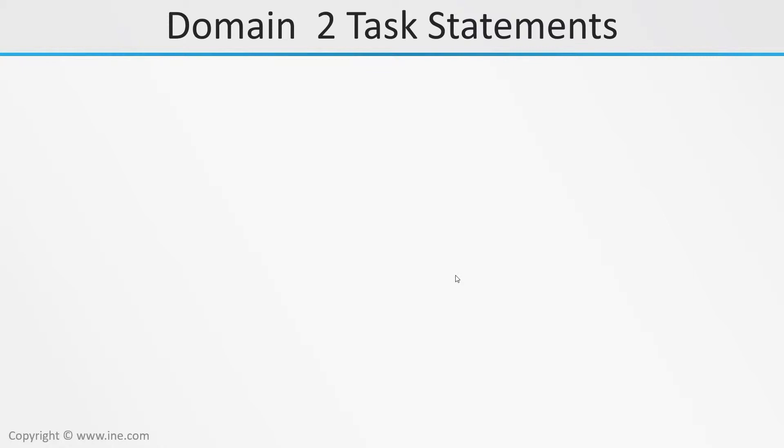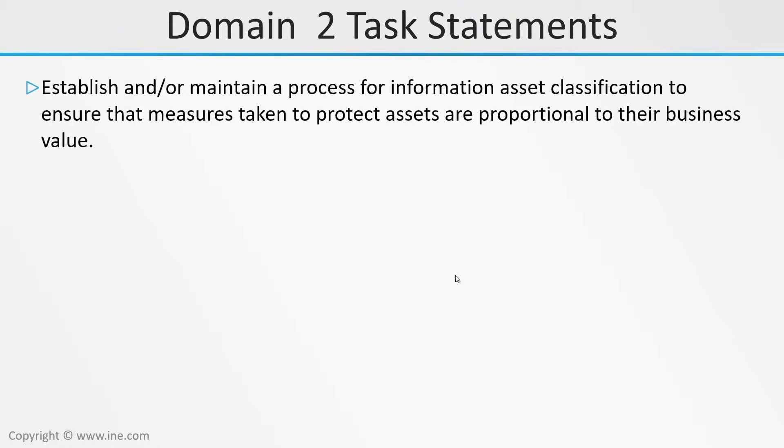As a future CISM candidate, you must have a thorough understanding of the task statements in order to master the CISM exam. Equally as important, the learning objective tasks are what a CISM is expected to be able to do. The tasks are related to the knowledge statements. As a future CISM, you must know what the core business of the organization is if you hope to demonstrate to executive management how information risk management can help to enable the business. The first task is to establish and maintain a process for information asset classification.